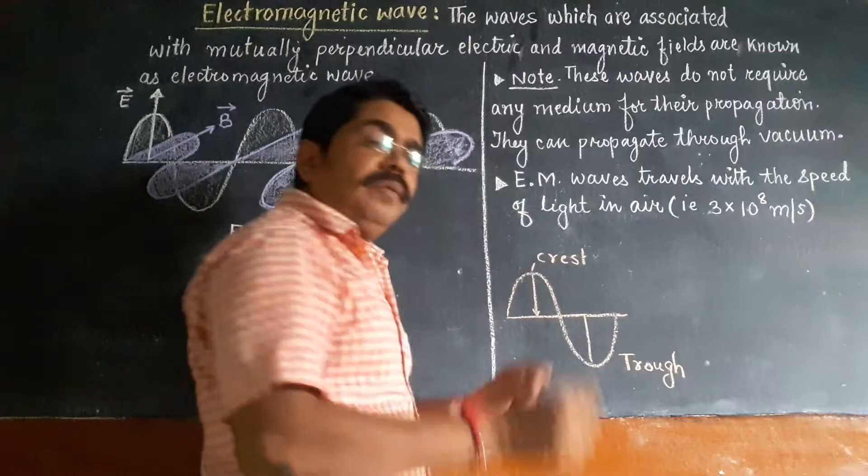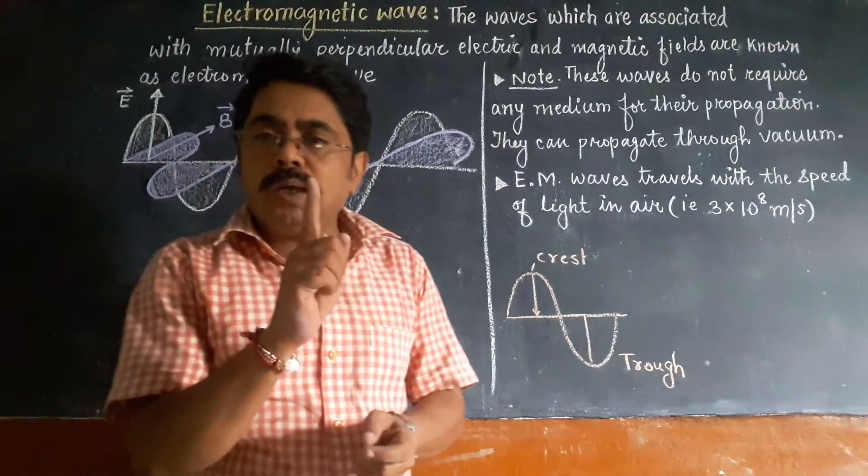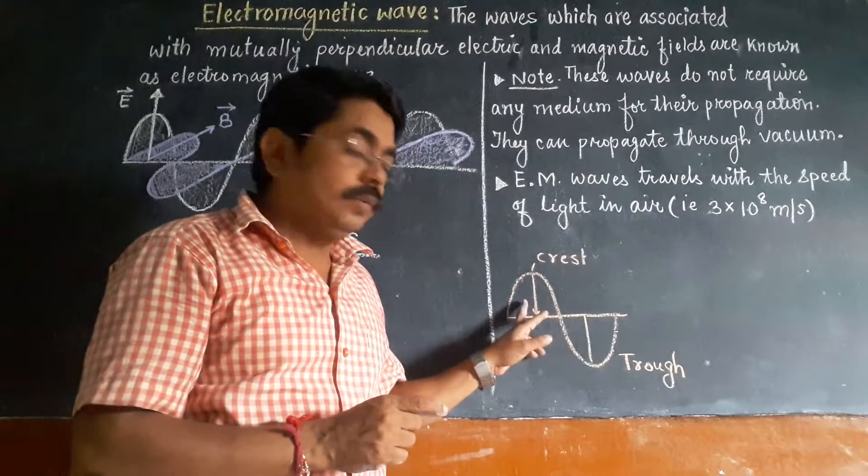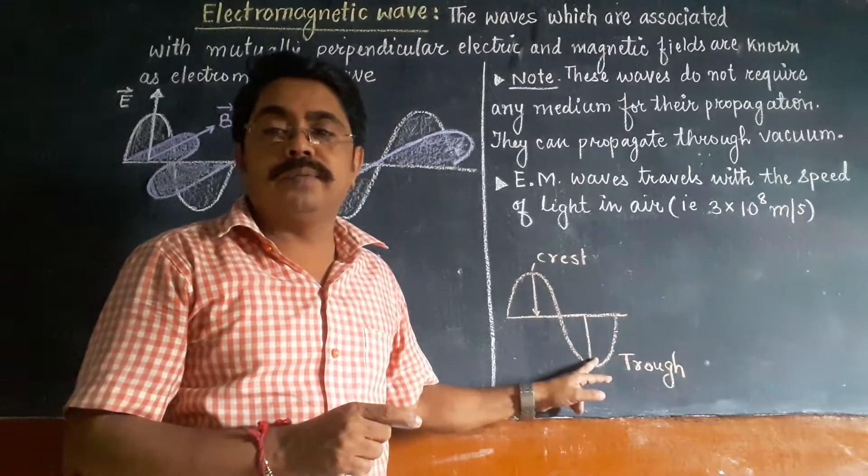So basically a wave is one wave, one complete wave which consists of a crest and a trough.